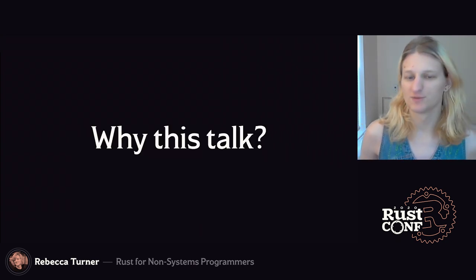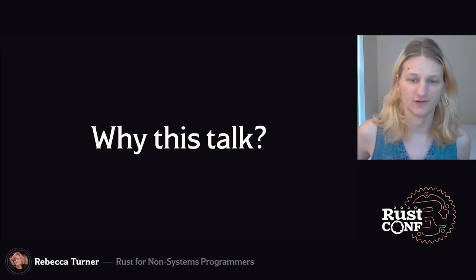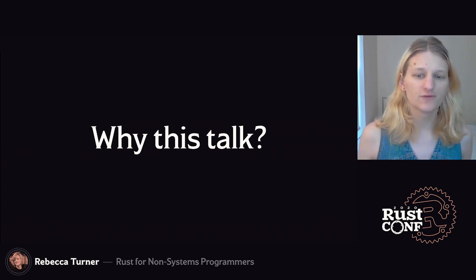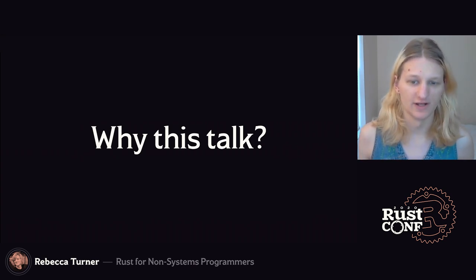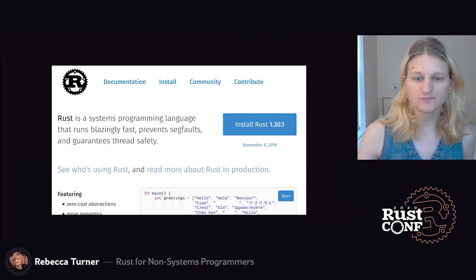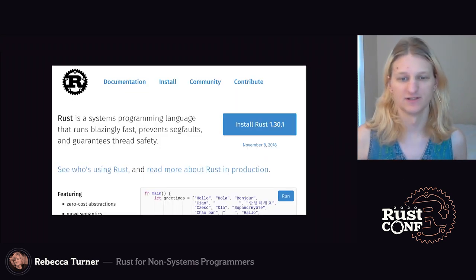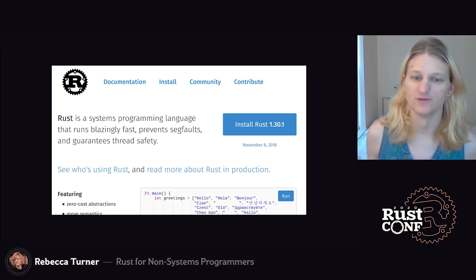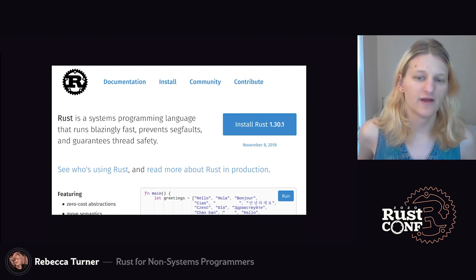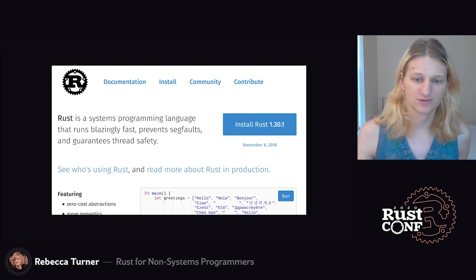I'm a non-systems programmer. Before learning Rust, I mostly wrote Python, and now Rust is pretty much my favorite language. But if you looked at the Rustlang.org website before 2019, that might not make a lot of sense to you. Here's the Rustlang.org website at the end of 2018, right before they rolled out the new site. The headline emphasizes systems programming, speed, and memory safety — all things I don't directly care about that much.